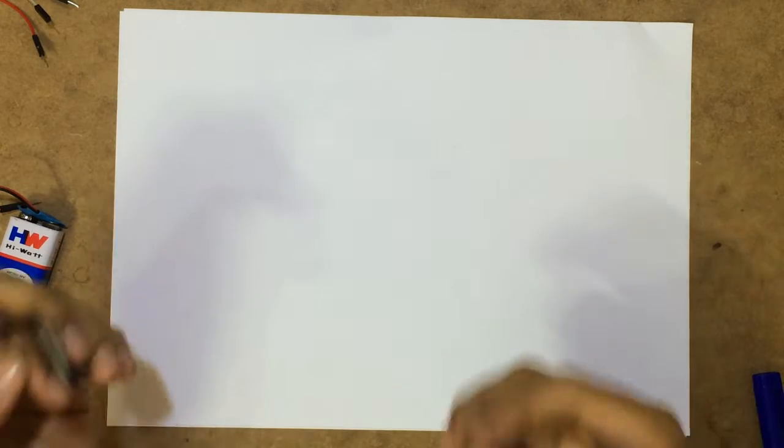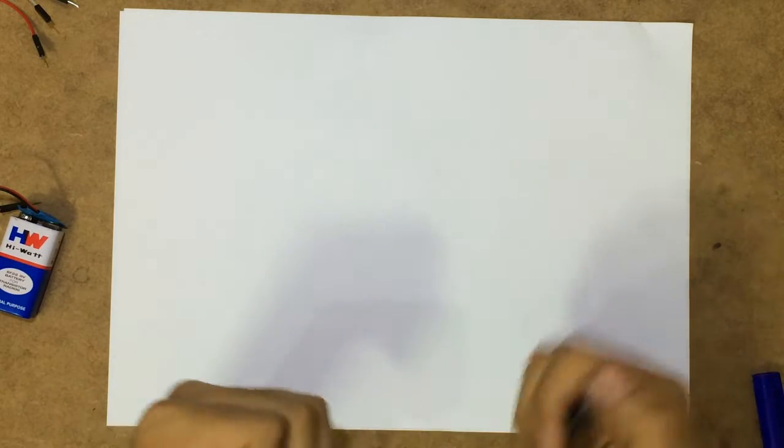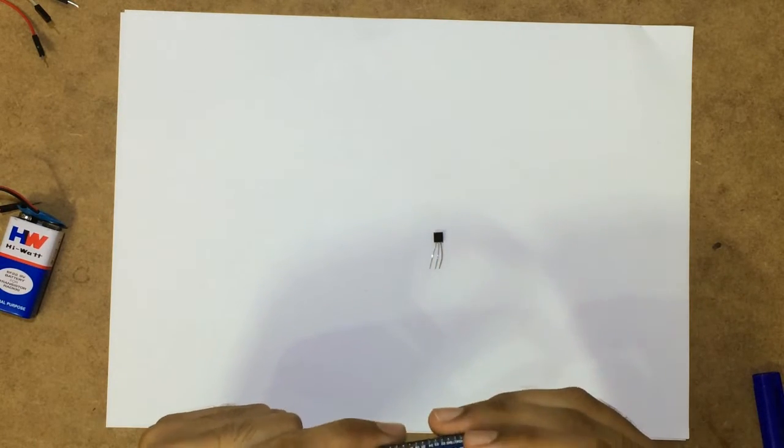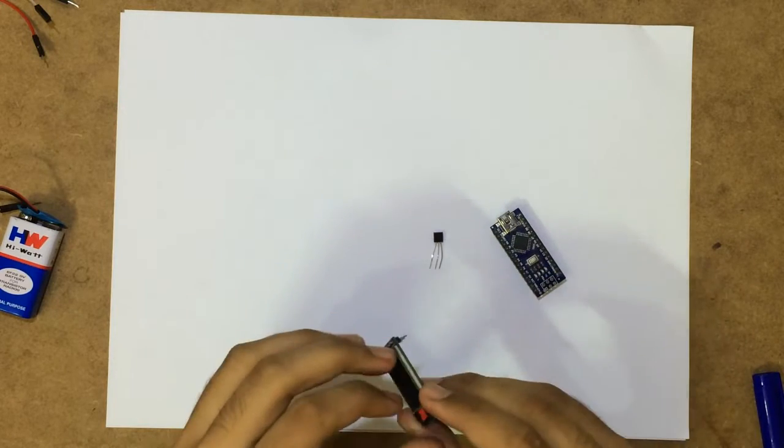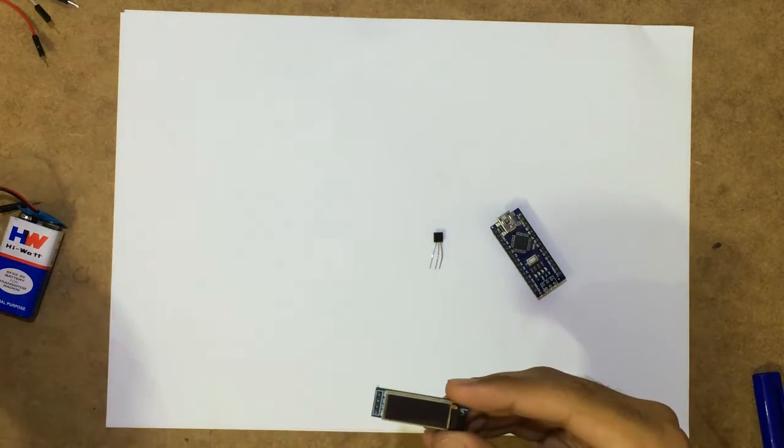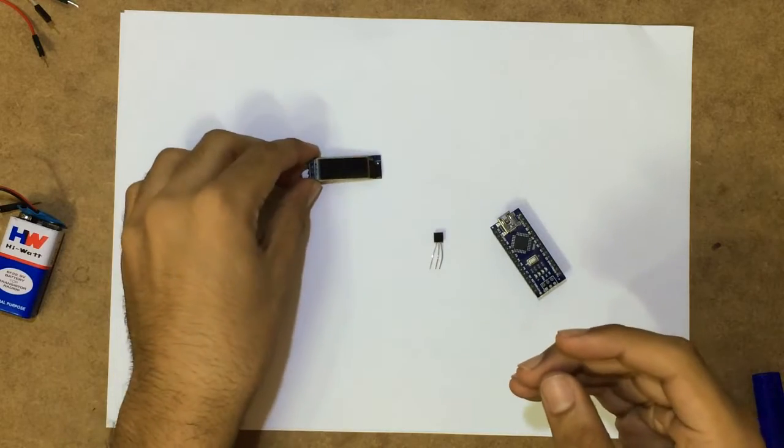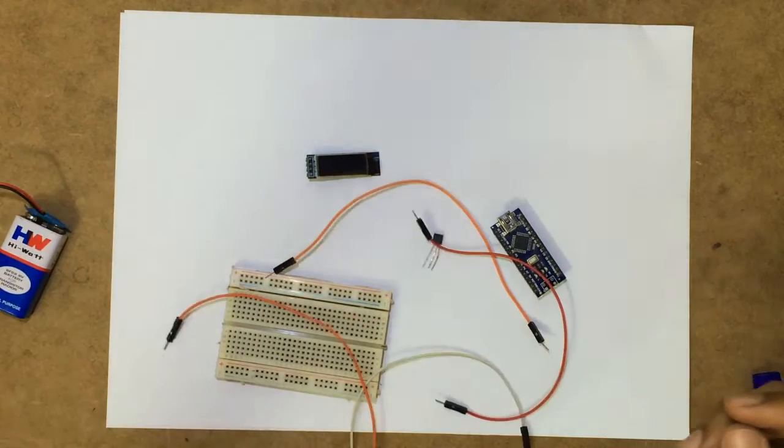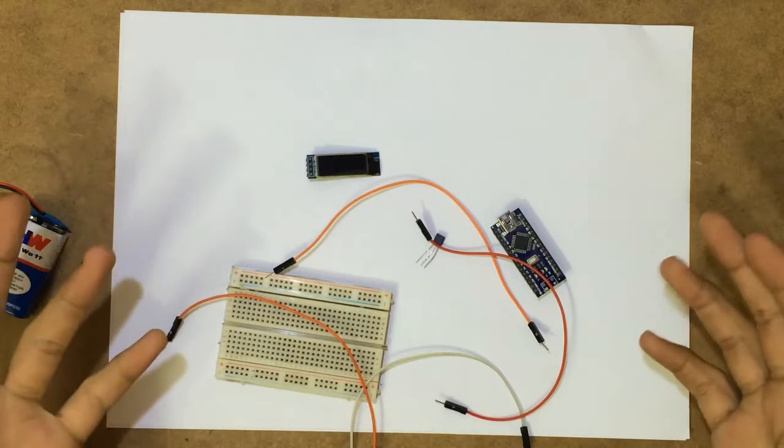So now as we aimed, we'll be making a digital thermometer using the LM35 temperature sensor, a microcontroller, namely Arduino Nano, an OLED display, and a breadboard and some wires. So now let's assemble this stuff on a breadboard.